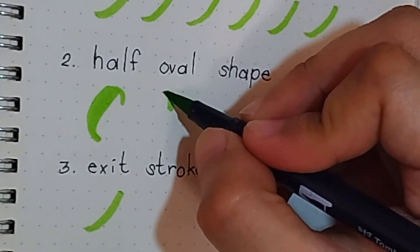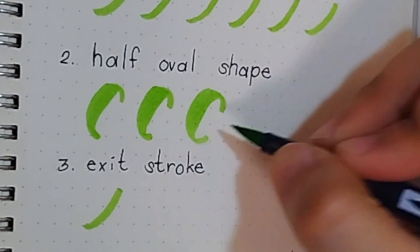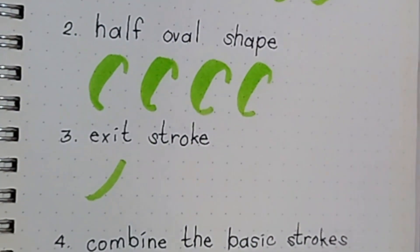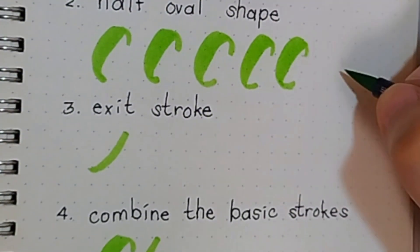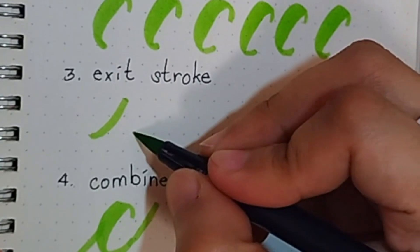Now let's practice a half oval shape. Add more pressure in doing downward strokes to achieve the thick lines.